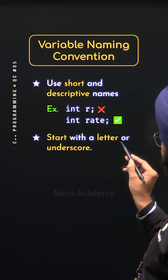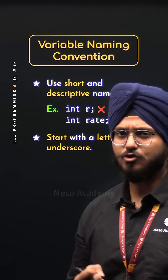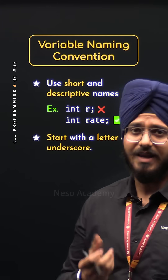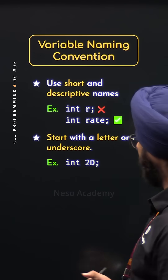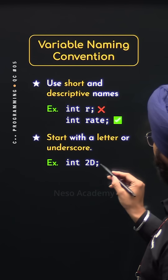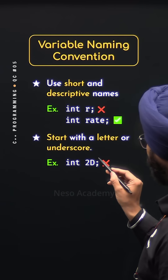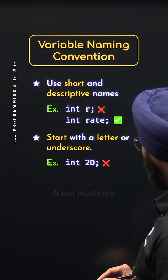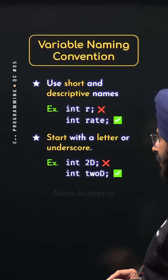Start with a letter or underscore. Always try to begin your variable names with a letter or an underscore. For example, this variable name is not valid because it begins with a digit. On the other hand, this one is perfectly valid.